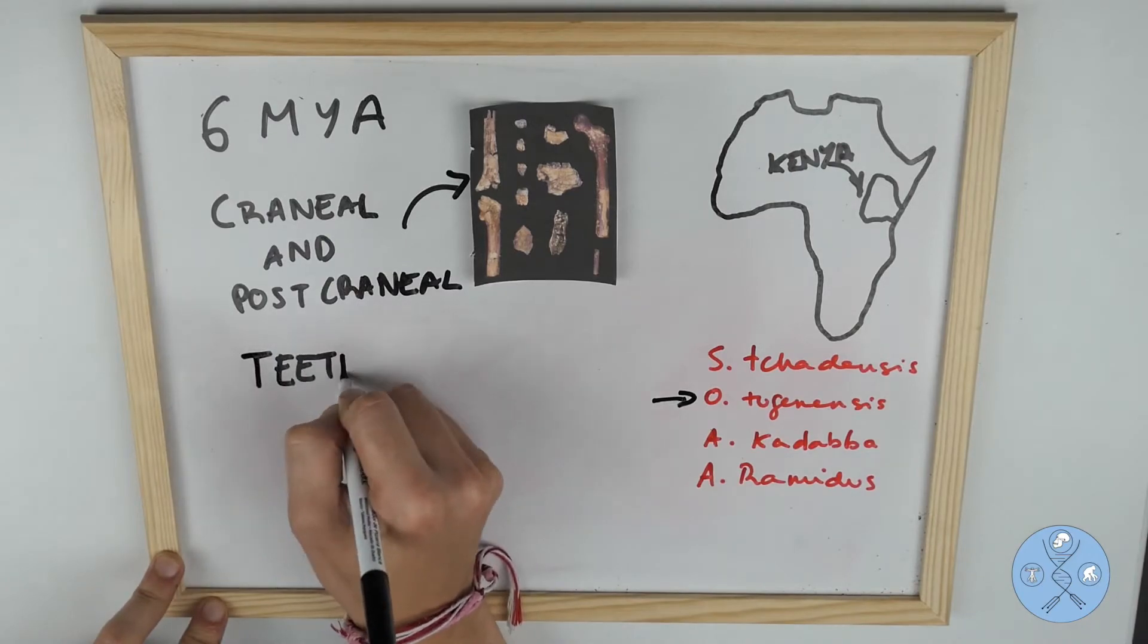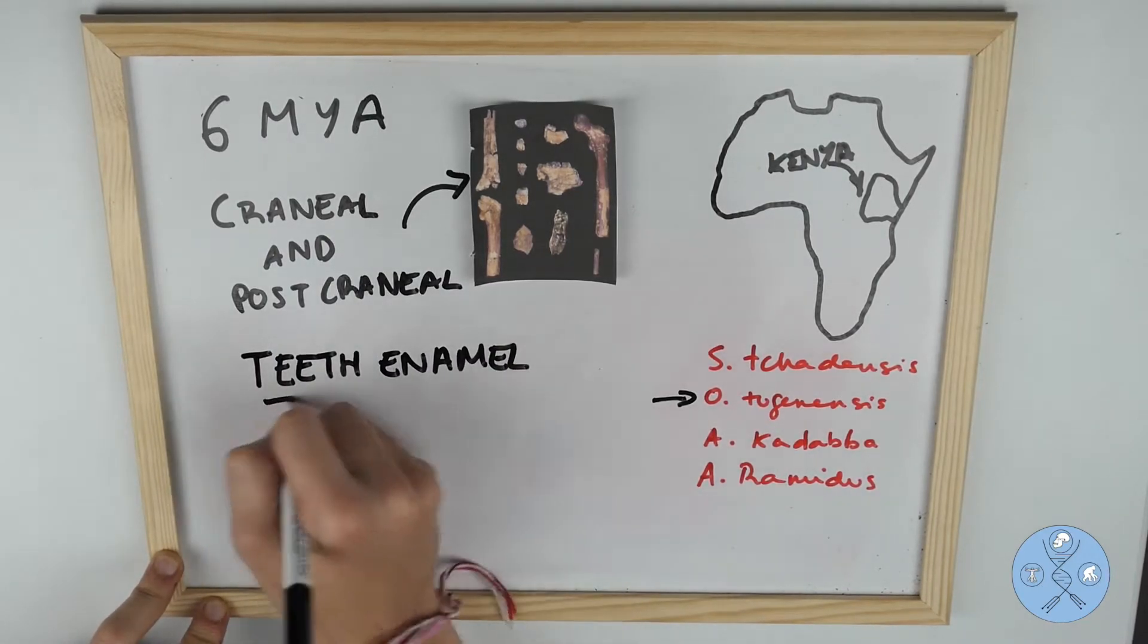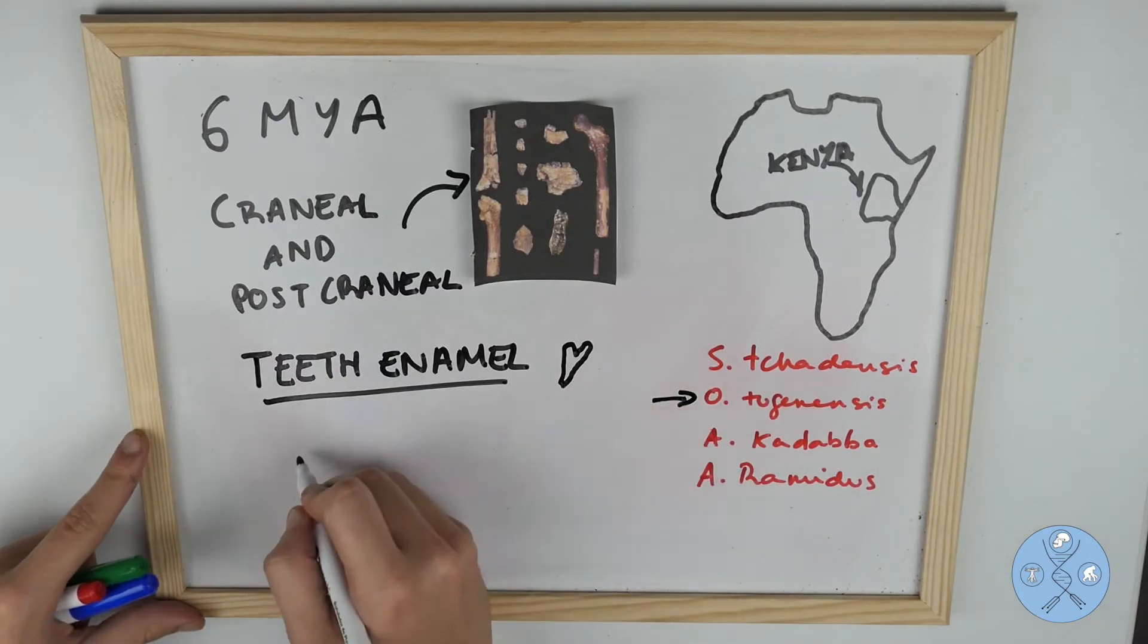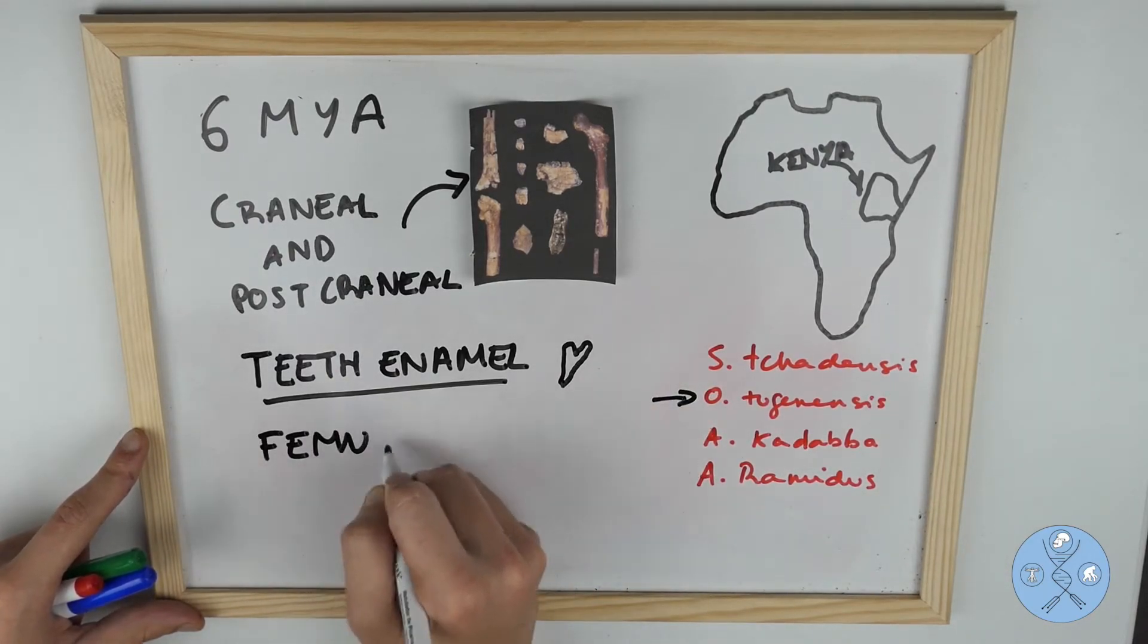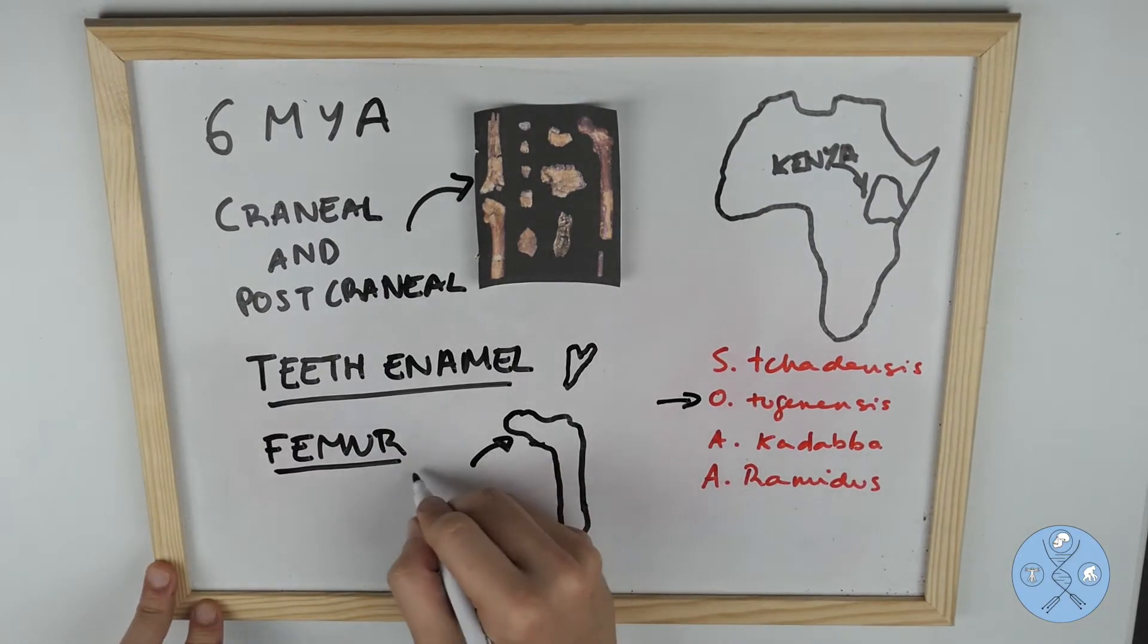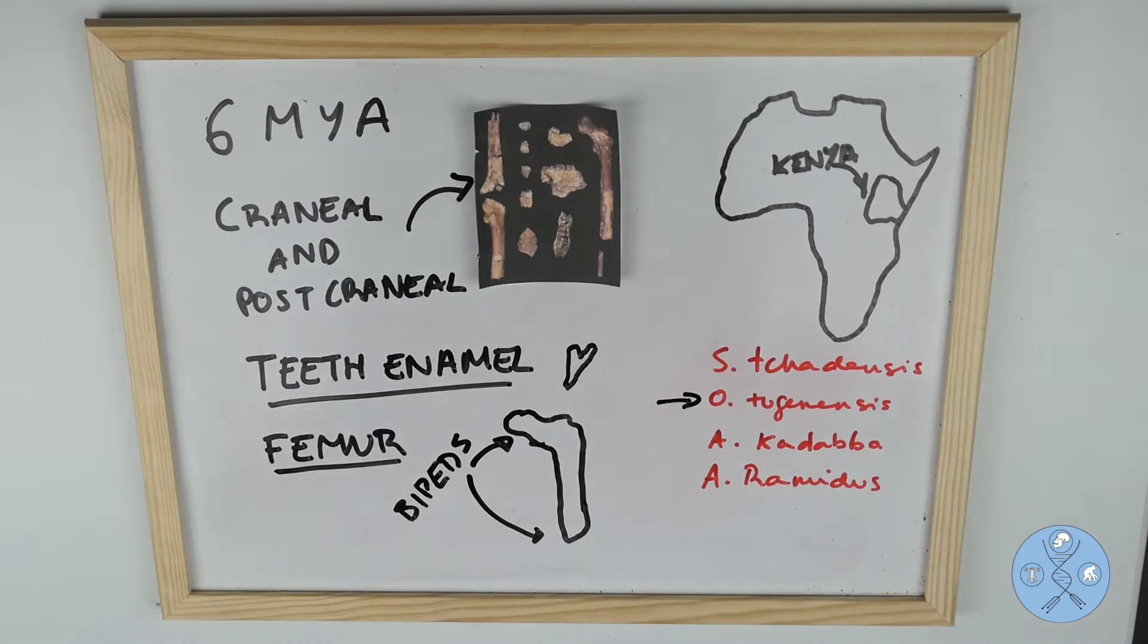Enamel this thick is not found in panins and is only found in later unambiguous hominins. However, the stronger evidence comes from the part of the femur below the hip. They say that the preferential thickness on the bottom and top of the cortical bone of the neck of the femur found is characteristic of bipeds and not of panins.